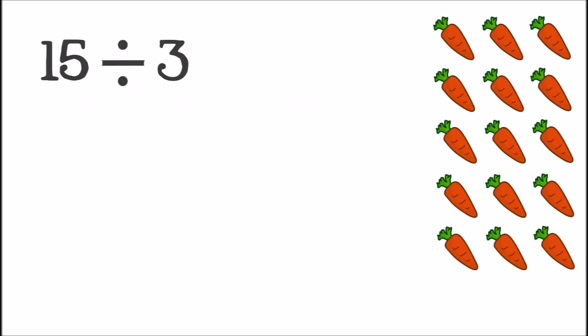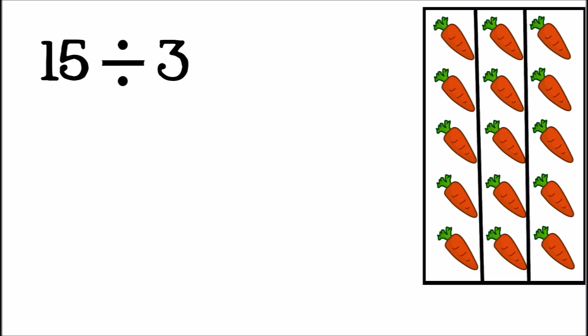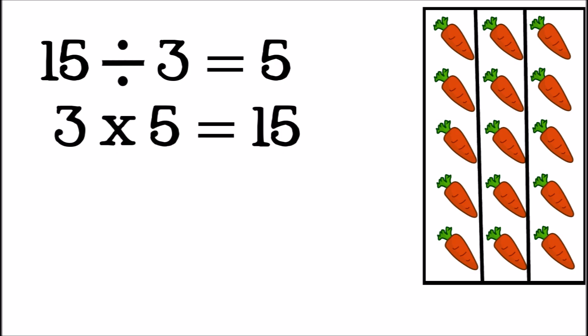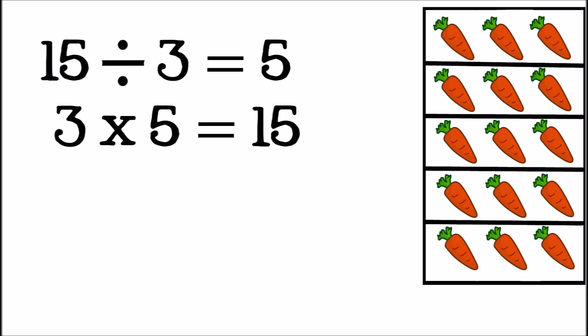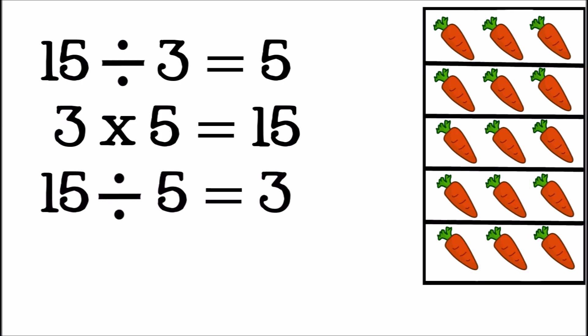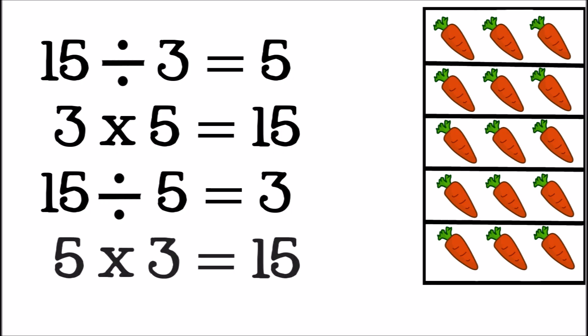First, let's look at fifteen divided by three. Fifteen divided into three equal parts is five. Three times five equals fifteen, and fifteen divided by three is five. You can also divide fifteen by five — fifteen divided by five is three. You can see that these three numbers give us four related facts. If you can remember one of these facts, it's easy to figure out the answers to the others.